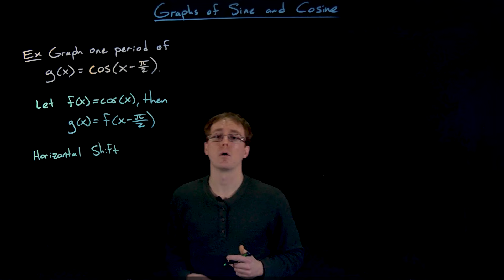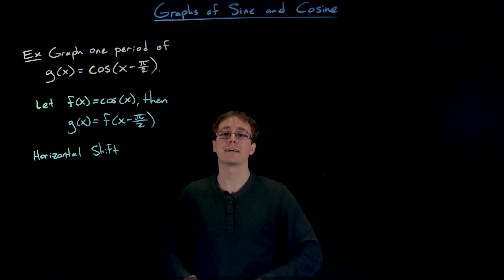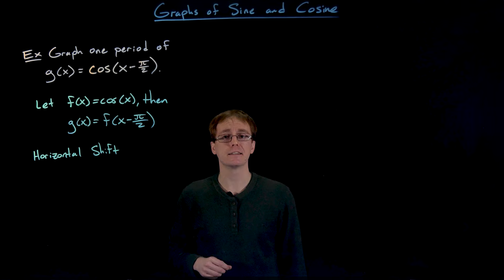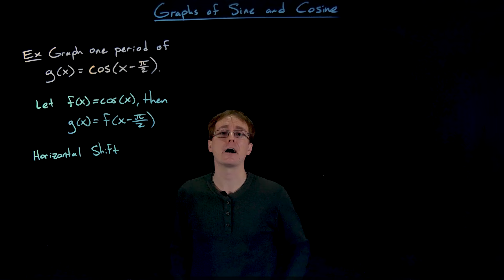So now what is our horizontal shift? How much is it by and in what direction are we going? That's where we have to be really careful and remember that counterintuitive nature for these horizontal transformations. Our function is written as x minus π over 2 on the inside, so that subtraction usually makes us think we're going to the left, but everything's counterintuitive for these horizontal transformations, so really we are going to be moving to the right.